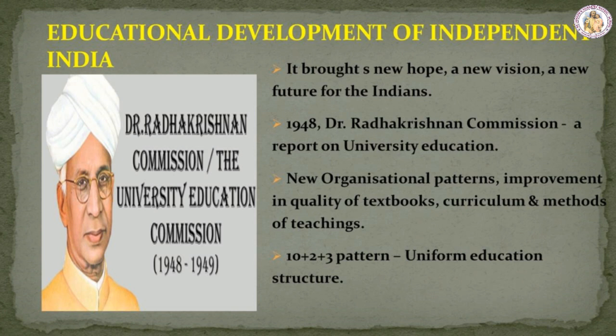Educational Development of Independent India. A new period in the history of education was ushered in with the attainment of independence in 1947, bringing new hope, a new vision and a new future for Indians. In 1948, the Radhakrishnan Commission was appointed to present a report on university education. One of the most important events was the appointment of the Secondary Education Commission in 1952-53, which suggested new organizational patterns, improvement in quality of textbooks, curriculum and methods of teaching. Free and compulsory primary education for all children up to age 14 years, and a uniform educational structure of 10+2+3 pattern, were its main recommendations.